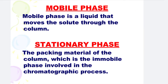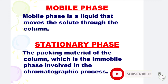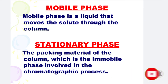Next is Mobile Phase. Mobile Phase is a liquid that moves the solute through the column. Next is Stationary Phase. The Stationary Phase is the packing material of the column, which is the immobile phase involved in the chromatographic process.